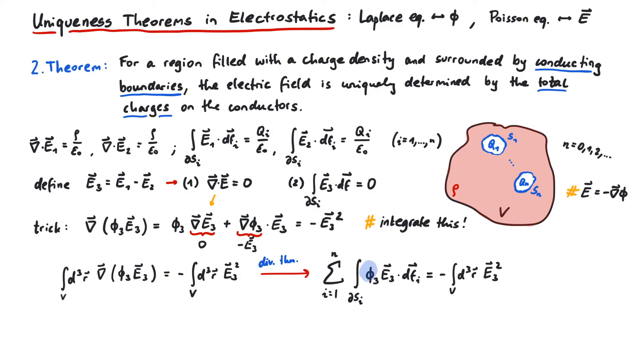At this point, we can think about this phi3 a bit more. The electrostatic potential on the surface of any conductor is constant. Conductors are so-called equipotentials. This means we can write the phi3 outside of the integral.